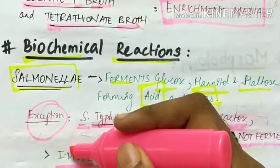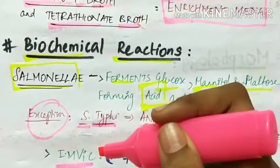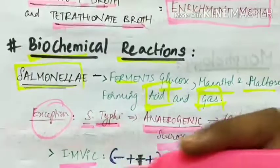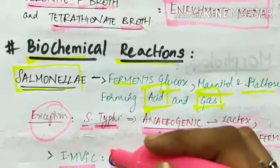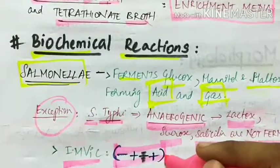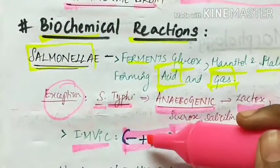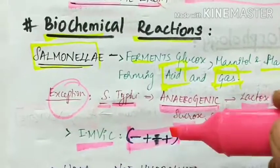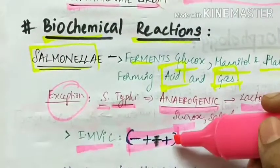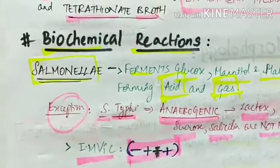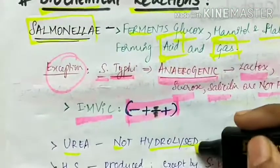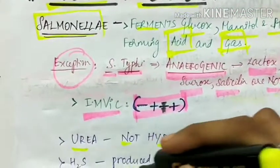IMVIC test - IMVIC stands for indole, methyl red, VP test, and citrate utilization. The IMVIC tests are negative, positive, negative, positive. So indole is negative, M is positive, VP test is negative, and citrate utilization is positive.